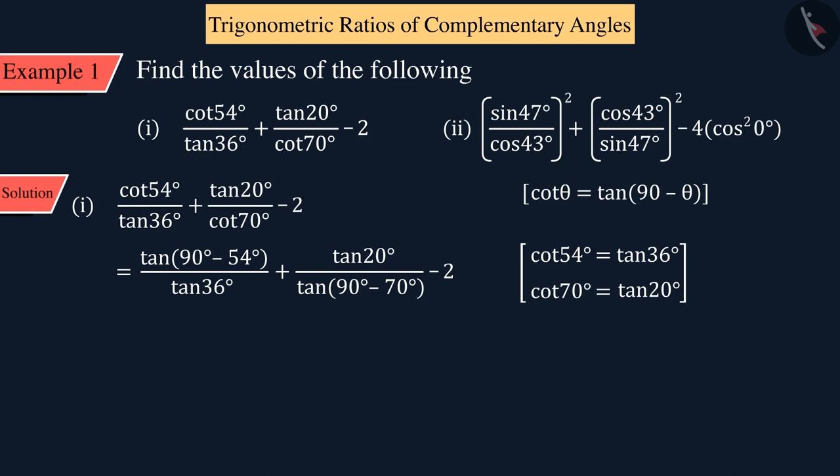On solving this, we get the value of tan 36° upon tan 36° and tan 20° upon tan 20° respectively in the first and second terms. Which, on further solving, gives the value of the given expression as zero.